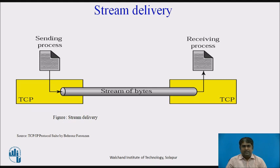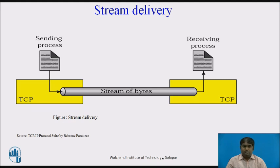The second service is stream delivery. TCP is a stream-oriented protocol. In UDP, a process sends a message with predefined boundaries; UDP adds its own header to each message and delivers it to IP for transmission. Each message from the process is called a user datagram, which becomes one IP datagram. Neither IP nor UDP recognizes any relationship between datagrams. TCP, on the other hand, allows the sending process to deliver data as a stream of bytes and allows the receiving process to obtain data as a stream of bytes.